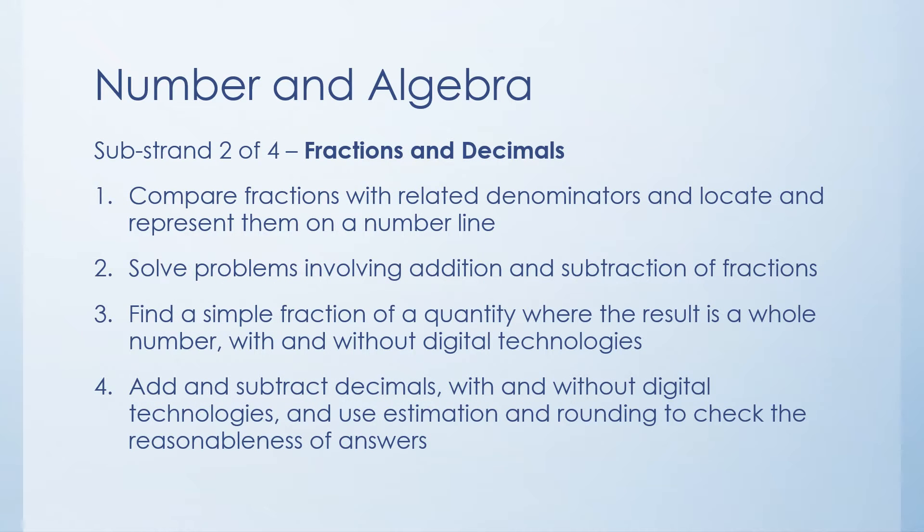The second substrand is fractions and decimals. The first content descriptor here will be comparing fractions with related denominators and locating them on a number line. So fractions that have the same denominators or similar denominators and seeing how they compare in magnitude its size on a number line.